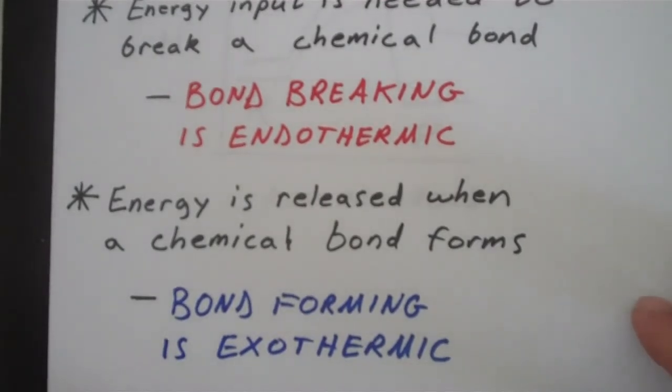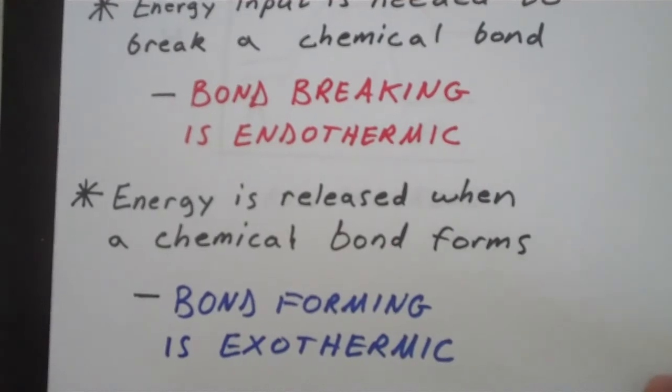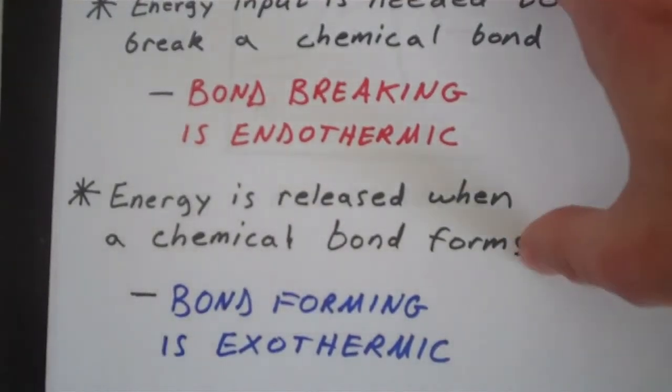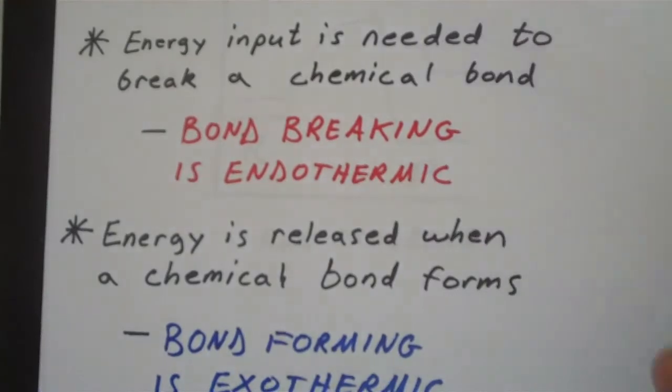Conversely, energy is released when a chemical bond forms. Therefore, bond forming is exothermic, with a negative delta H value.